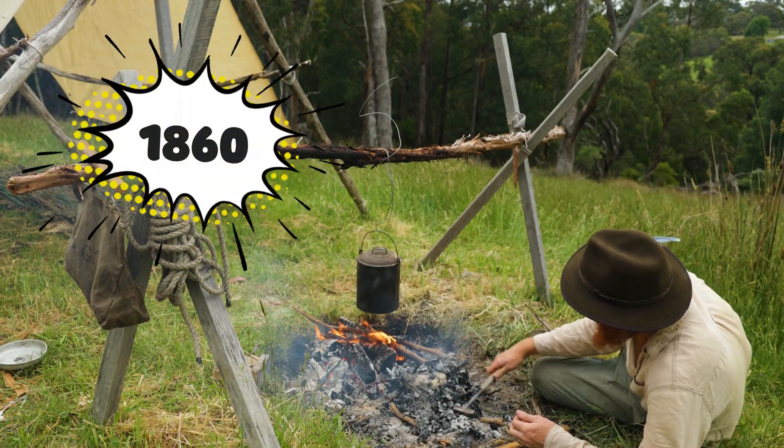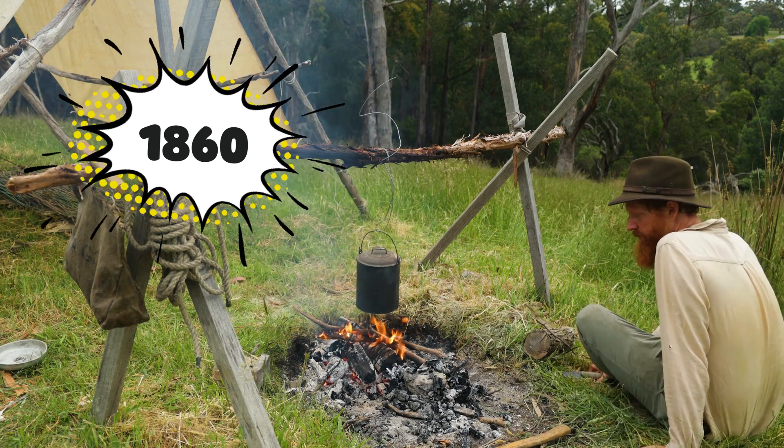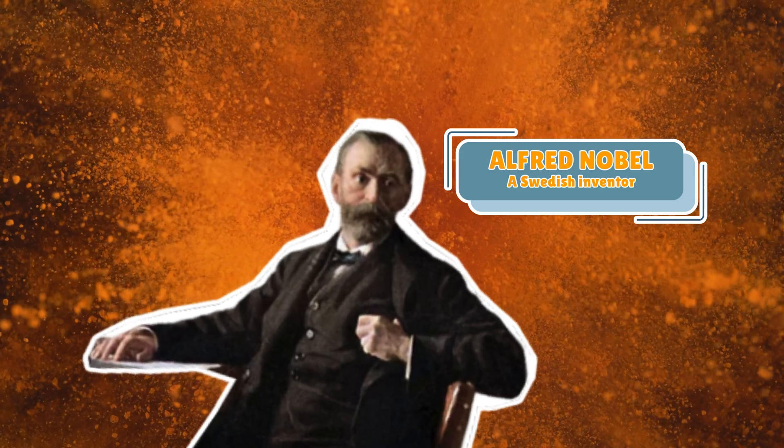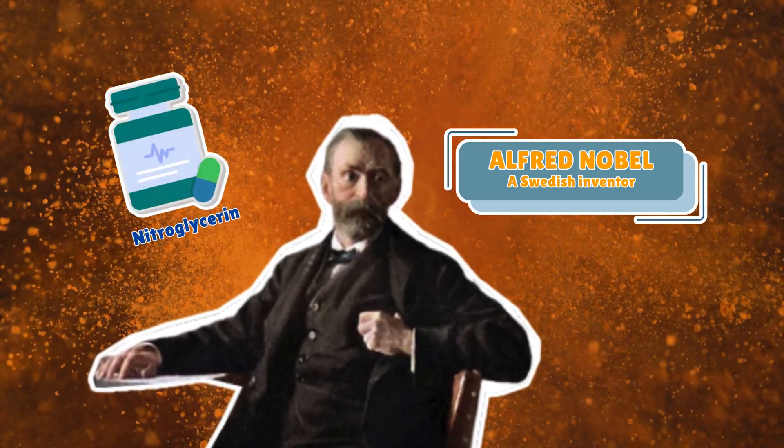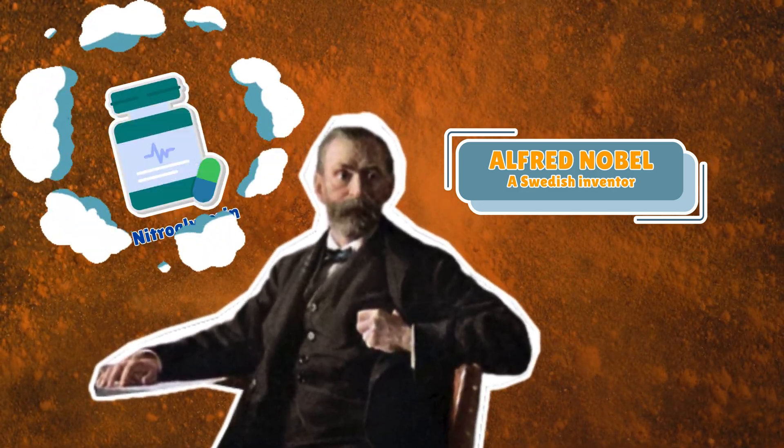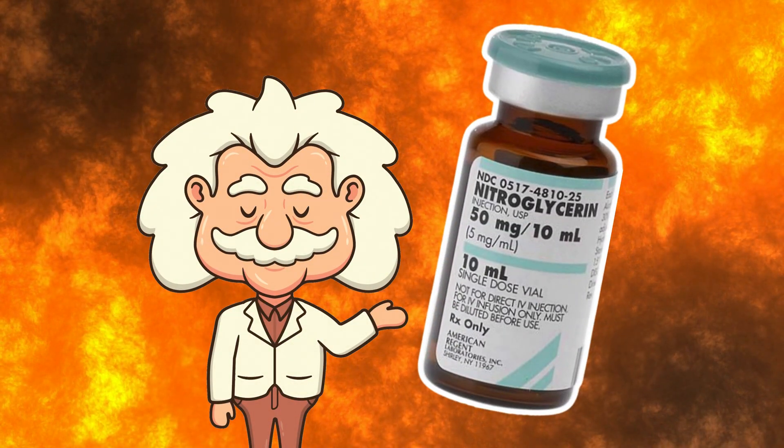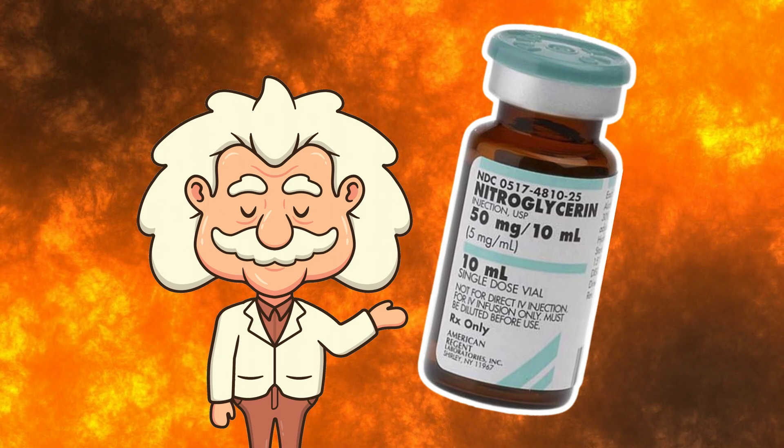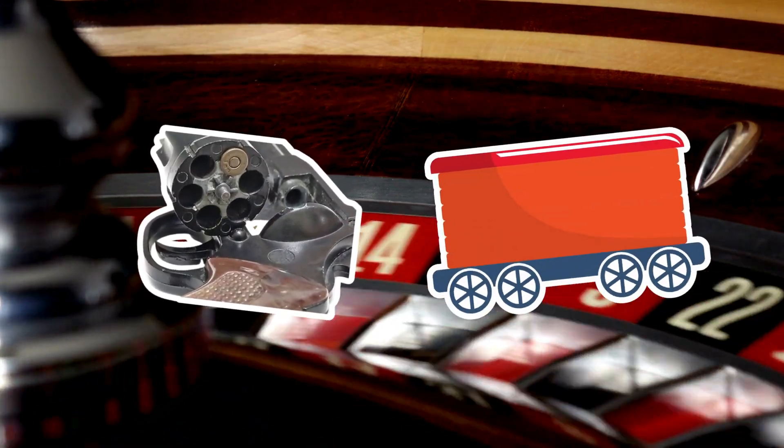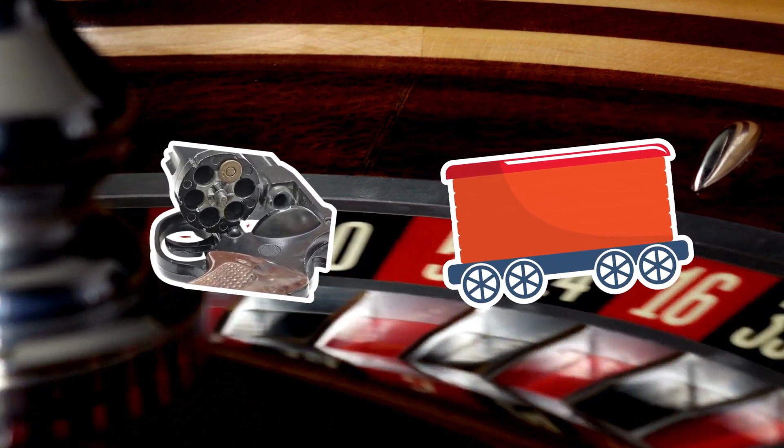Let's time travel back to the 1860s, a magical era of top hats, questionable hygiene, and very unsafe chemistry. Meet Alfred Nobel, a Swedish inventor who looked at nitroglycerin, a volatile liquid that could explode if you sneezed near it, and thought, yeah, I can make this more practical. Nitroglycerin was powerful, but had the minor inconvenience of exploding unpredictably. Transporting it was like playing Russian roulette with a freight wagon. Nobel wanted to find a way to tame this volatile beast.